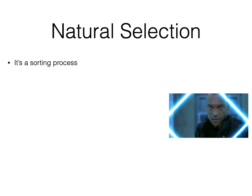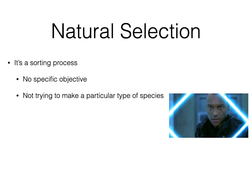Natural selection is a sorting process. For those who've seen the Resident Evil movies, I won't describe the screenshot because it's gruesome, but it's a good example. The important thing to remember is that there's no specific objective of natural selection — it's not trying to create organisms that look or act a certain way. It is simply a way in which members of a population are sorted into different categories based on differential survival and reproduction.